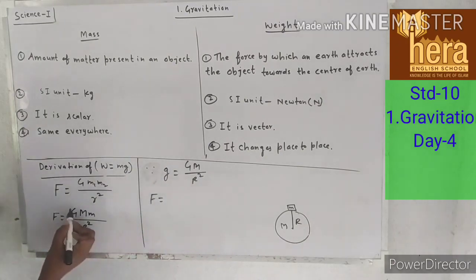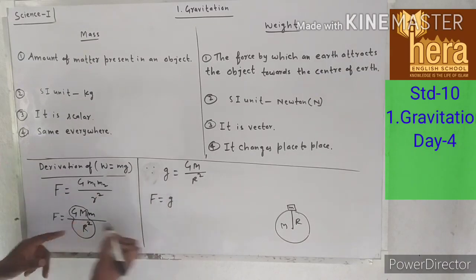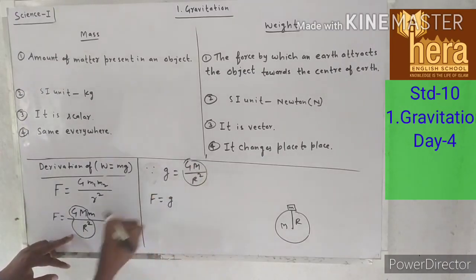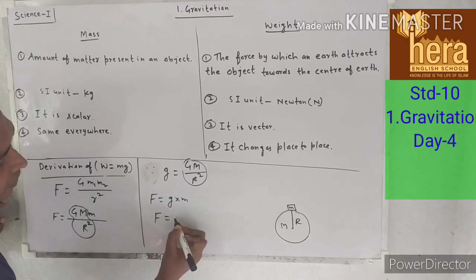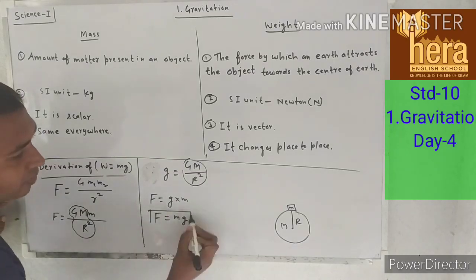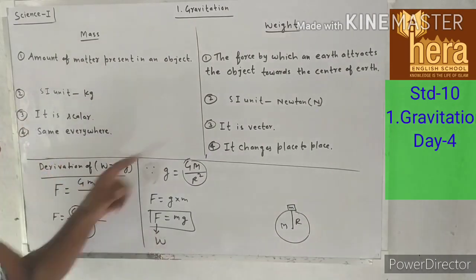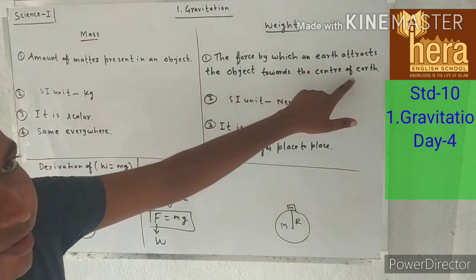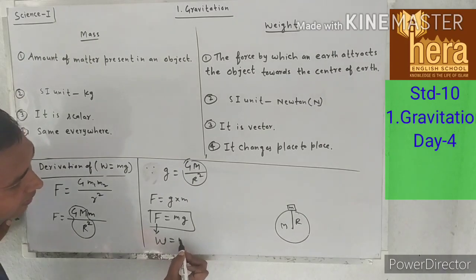So, substituting g equals GM/R² into the force equation, F equals g times m. Since the force here is weight — the force by which earth attracts the object toward its center — we can write W equals m times g.